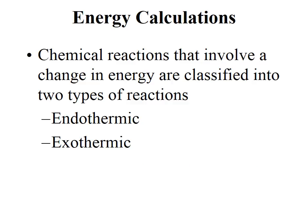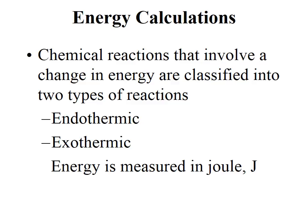A couple of things to remember: energy is measured in Joules, symbol J, and one kilojoule is 1000 Joules. More often than not, you're going to see energy measured in kilojoules rather than Joules, because the amount of energy produced in Joules is so large it's easier to work with the larger unit.